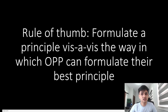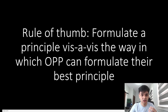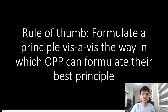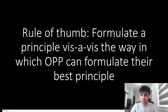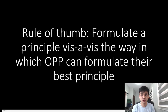Formulate a principle vis-à-vis the way in which opposition can formulate their best principle. In other words, start off your principled analysis by explaining what the likely principle opposition is to forward, be as charitable as possible, and then explain why you believe this to be wrong. Then you can proceed to defend your alternative principled position. In my opinion, this is a very strong and aggressive way to make sure that your principle is not value neutral or easily agreeable in a debate.